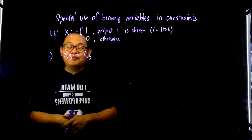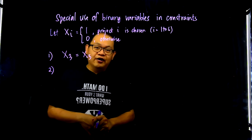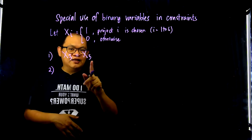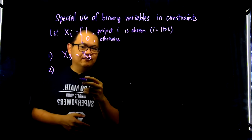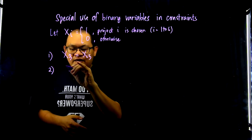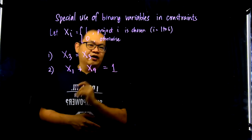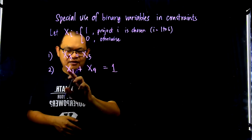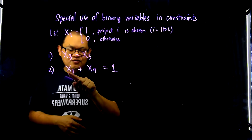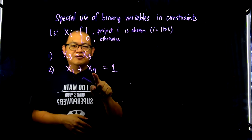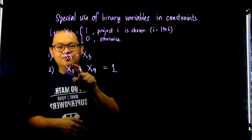For example number 2, let's say you take projects 1 and 4. You have to choose 1 and only 1 — you cannot choose both. To write a constraint for that, you take x1 and add it with x4 and equate it to 1. Because x1 and x4 are binary variables, if x1 is 1, then this constraint forces x4 to be equal to 0. If x4 is equal to 1, then this constraint will force x1 to be equal to 0.